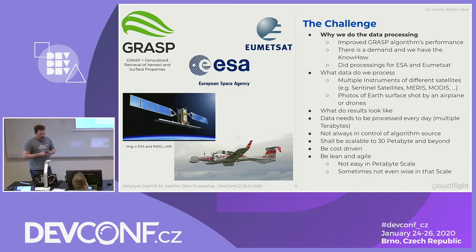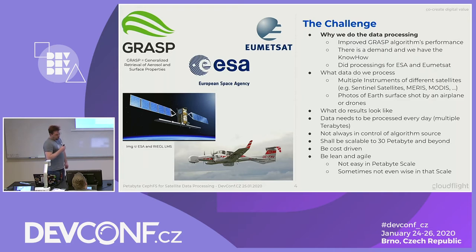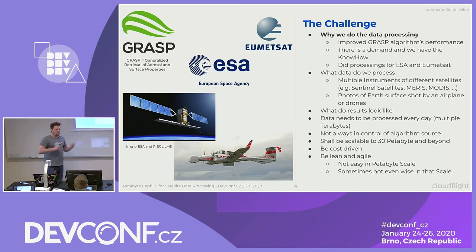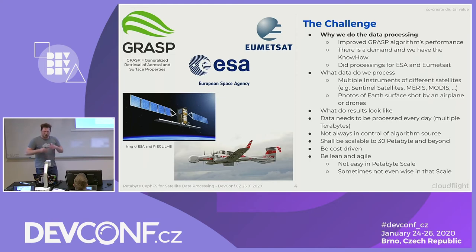Why did we start to do this data processing? We met an academic research group in France where they were doing an algorithm called GRASP — that's the Generalized Retrieval of Aerosol and Surface Properties — so basically what do we have in the air? The algorithm was apparently very great; they got much more out of the satellite data than everybody else did. But they had one problem: they were academics. Academics tend to be great in developing algorithms, but not so great in developing code that's fast.